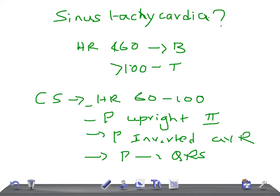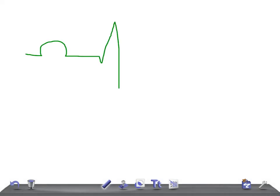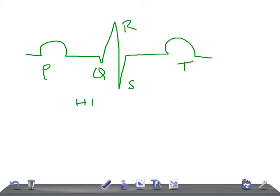Now let's talk about sinus tachycardia. You know this is a P, Q, R, S, and T waveform. To call it sinus tachycardia, the heart rate should be more than 100 beats per minute. And since it's a sinus tachycardia, it must still fulfill the criteria of sinus rhythm — so the P wave should be upright in lead II.